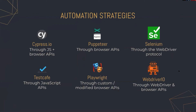We have Cypress and TestCafe on one side, using web APIs to automate the browser — essentially JavaScript running next to your application in the browser, triggering commands like finding an element or finding text. On the other side, we have Puppeteer and Playwright using browser APIs, which is what WebDriver used to do through the WebDriver project.